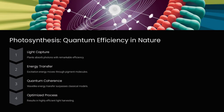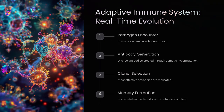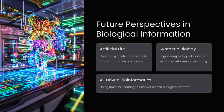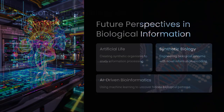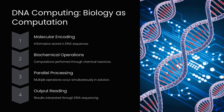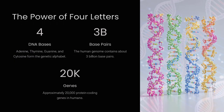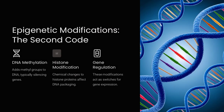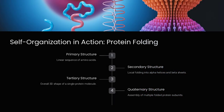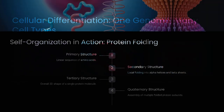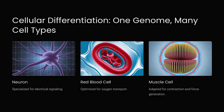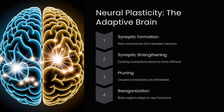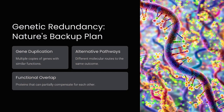One answer lies in epigenetics, where chemical modifications on DNA influence gene expression without altering the sequence itself. Another key mechanism is alternative splicing, allowing a single gene to produce multiple different proteins, vastly increasing biological complexity. Then there's the role of non-coding RNA regulatory networks and environmental interactions, which modify how genetic instructions are interpreted.